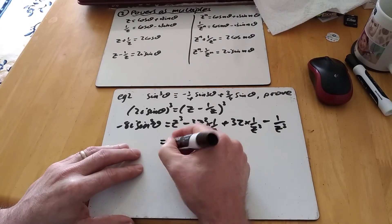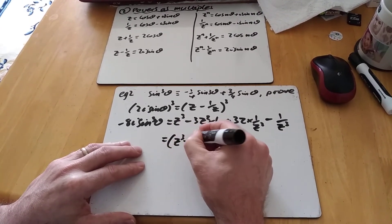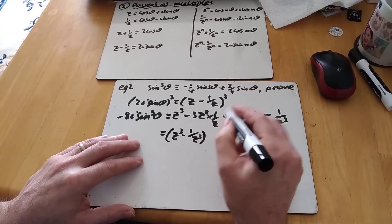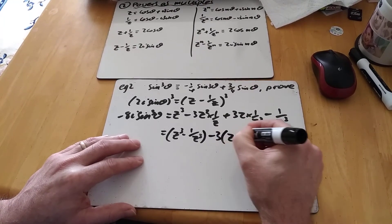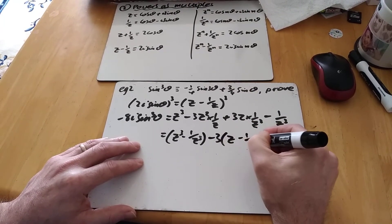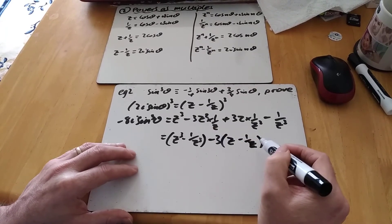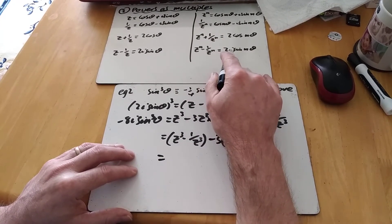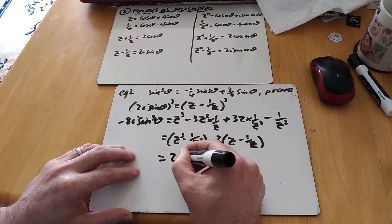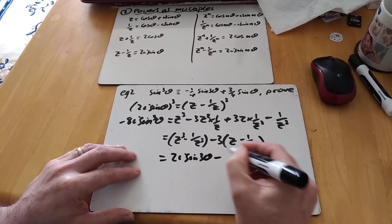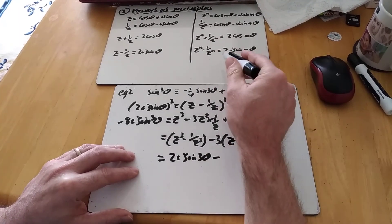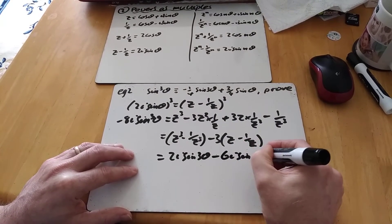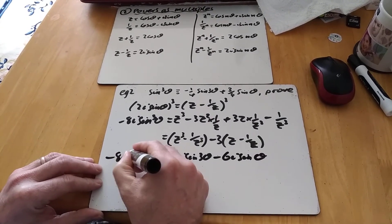And I've got exactly the same process now. I've got z cubed minus 1 over z cubed. And then minus 3z minus 1 over z. So z cubed minus 1 over z cubed, go back to this one now, it's going to be 2i sine 3 theta. And then minus 3 lots of z minus 1 over z is simply 2i sine theta, minus 6i sine theta. And that's minus 8i sine cubed.